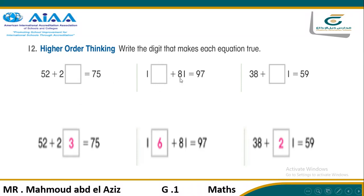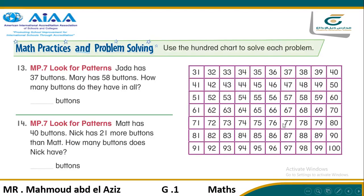Which number plus 81 equals 97? The tens digit is 1, and 1 plus 8 equals 9, so no problem in the tens. For the ones: which number plus 1 equals 7? 1 plus 6 equals 7, so you write 6. Another question: 38 plus what equals 59? For the ones: 8 plus 1 equals 9. And for the tens: 3 plus 2 equals 5. So the answer is 21.